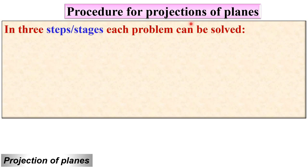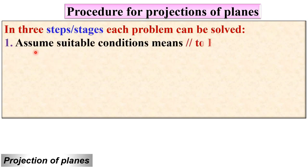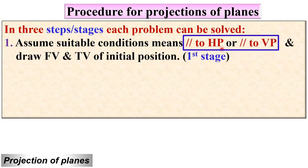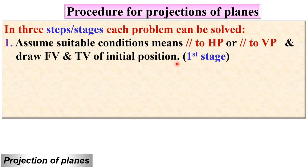Each problem from the projection of plane can be solved in maximum three stages. In the first stage you have to assume suitable conditions — that means the plane is parallel to HP or parallel to VP — and according to that you have to draw the front view and top view for the initial position.